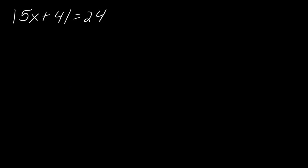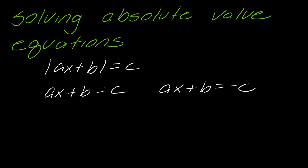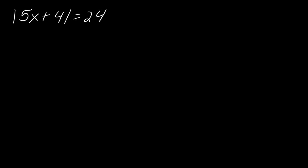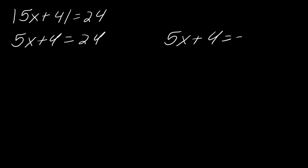So for equations, let's say I have this example: the absolute value of 5x plus 4 equals 24. There is a rule for solving absolute value equations. In general, if you have an equation set up like this, you're going to break it into two mini equations: one where it equals the number, and one where it equals the negative of the number.